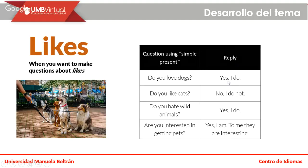Possible answers or replies: 'Yes, I do,' 'No, I don't,' or 'No, I do not.' 'Are you interested in getting pets?' — 'Yes, I am. To me, they are interesting.' ¿Están interesados en conseguir mascotas? Sí, para mí ellos son interesantes. But it depends on your personal opinion. You could say 'No, I'm not. To me, they are boring,' or 'They require I spend a lot of time with them, and maybe I am too busy.'